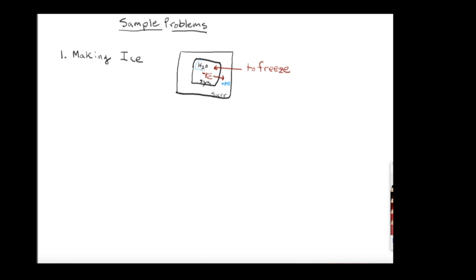We need to make a solid out of the liquid water. In order to take liquid water and make a solid, we're going to have to remove the energy. Kinetic energy has to come out of the system. So, remembering our definitions, if energy is moving out of the system, this process — the freezing of ice — is exothermic. We have to remove the energy.